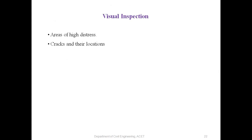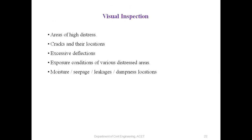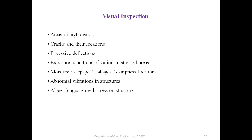Visual inspection covers areas of high distress, cracks and their locations, excessive deflections, exposure conditions of various distressed areas, moisture seepage, leakages, dampness locations, abnormal vibrations in structures, fungus growth, stress on the structure, photographic records, and areas of immediate concern.